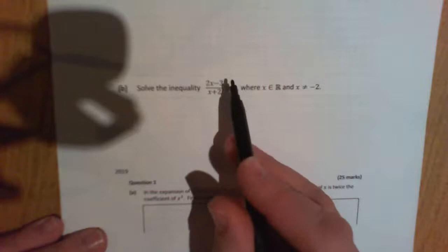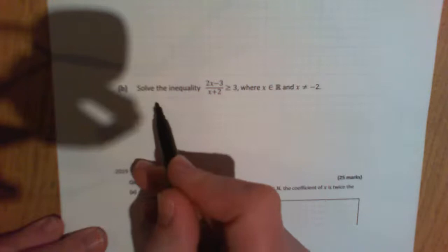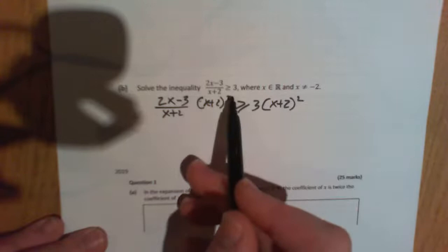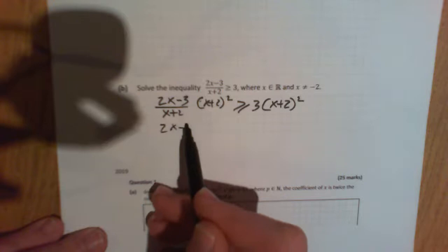Okay. Well, this sounds pretty innocuous, what they're asking us to do. It doesn't sound like it's too crazy. So how do we solve it? Well, the trick with these is to multiply both sides by the square of the denominator. So that's really going to be 2x minus 3 over x plus 2 by x plus 2 squared greater than or equal to 3 by x plus 2 squared. And of course, one of them cancels with that. So on the left-hand side, we're just going to end up with 2x minus 3 by x plus 2.